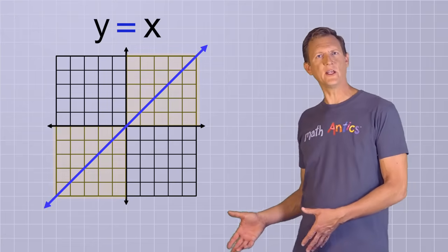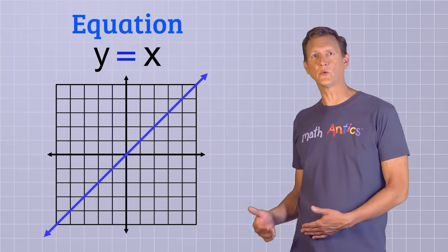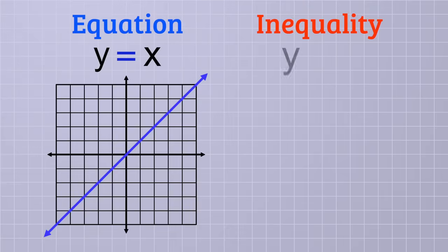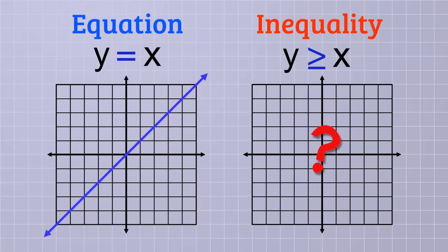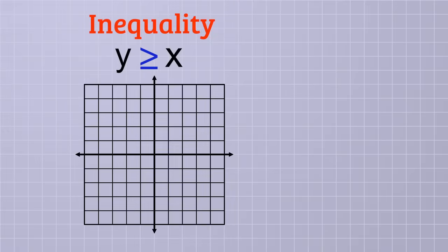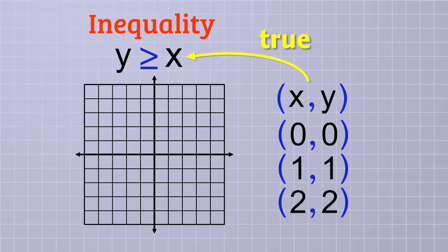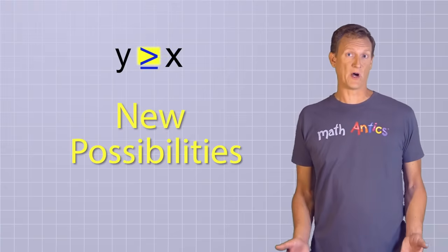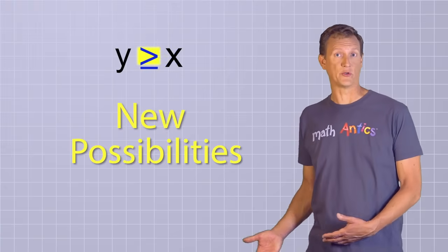Now, what if we change this from the equation y equals x to the inequality y is greater than or equal to x? How would that affect our graph? To figure that out, we need to determine all the combinations of x and y that would make this inequality true. Well fortunately, all of the solutions we found for y equals x will still work for this inequality because it also contains the equal sign. That means that the diagonal line can stay in our graph. But the greater than sign opens up a lot of new possibilities that would also make this statement true.